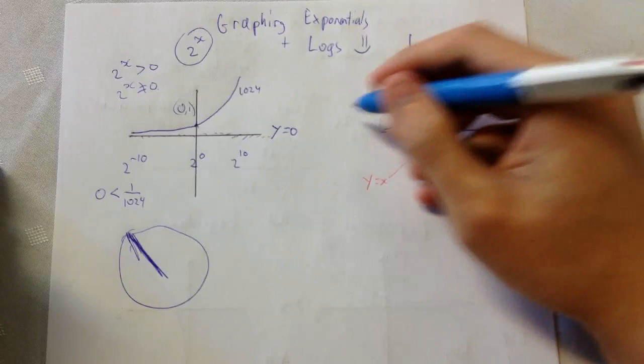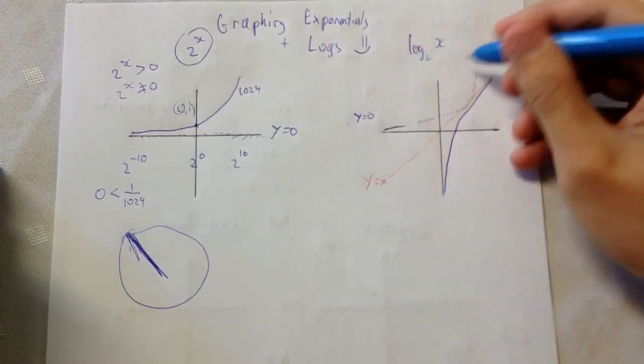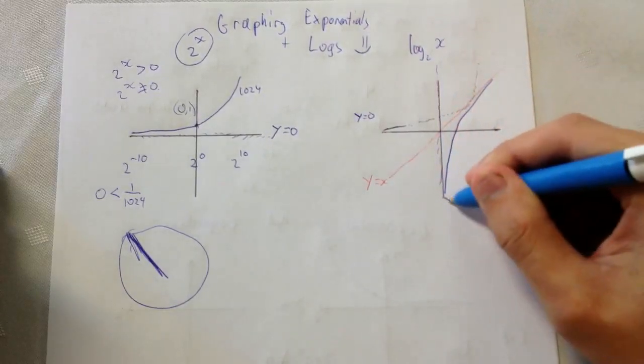Now, the asymptote for this one was y equals 0. The asymptote for this one is a vertical one. x equals 0.